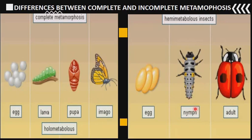In incomplete metamorphosis, the nymph and the adult both live in the same habitat and feed on the same food. But in complete metamorphosis, the larva, pupa, and adult live in different environments and feed on different food. This means feeding on different food also reduces the rate of competition in the environment. These are some of the differences you can observe between complete and incomplete metamorphosis.